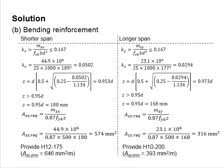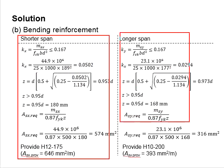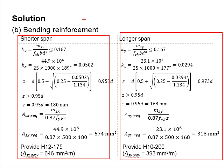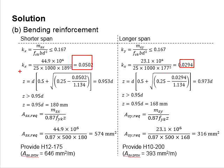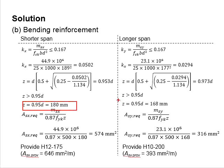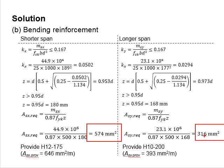Next, calculate the amount of reinforcement required to resist bending using standard calculation steps. The moment and depth differ for each direction, leading to slightly different K factors. Substituting K into the lever arm equation, the lever arm is found to be higher than 0.95d, so the maximum of 0.95d is used. Substituting this into the area of reinforcement equation gives the required reinforcement in the shorter and longer directions.